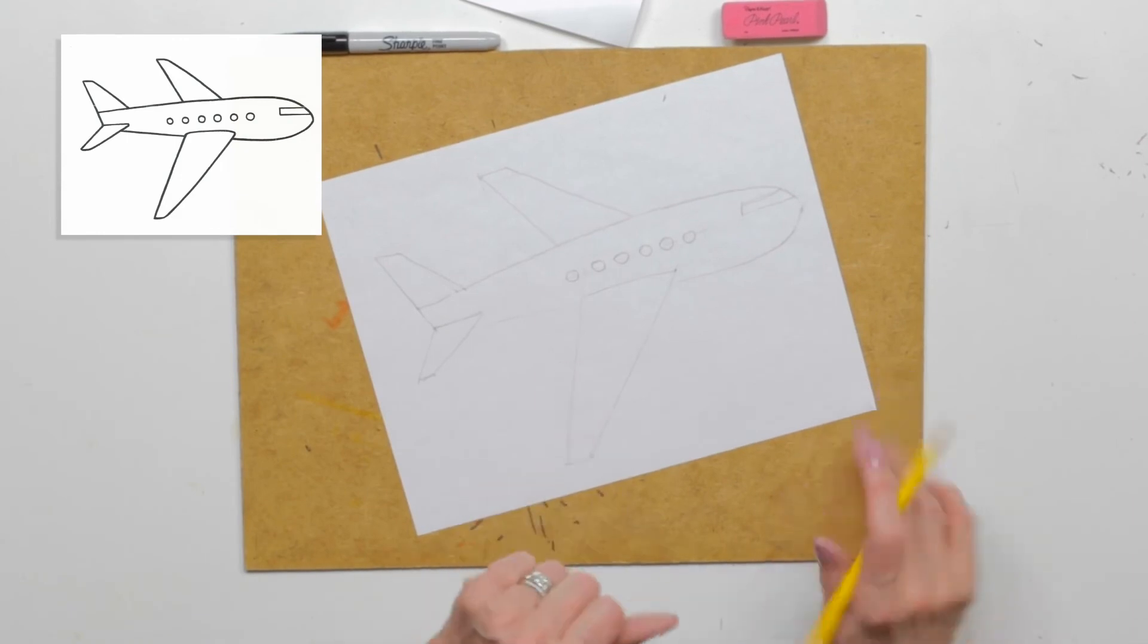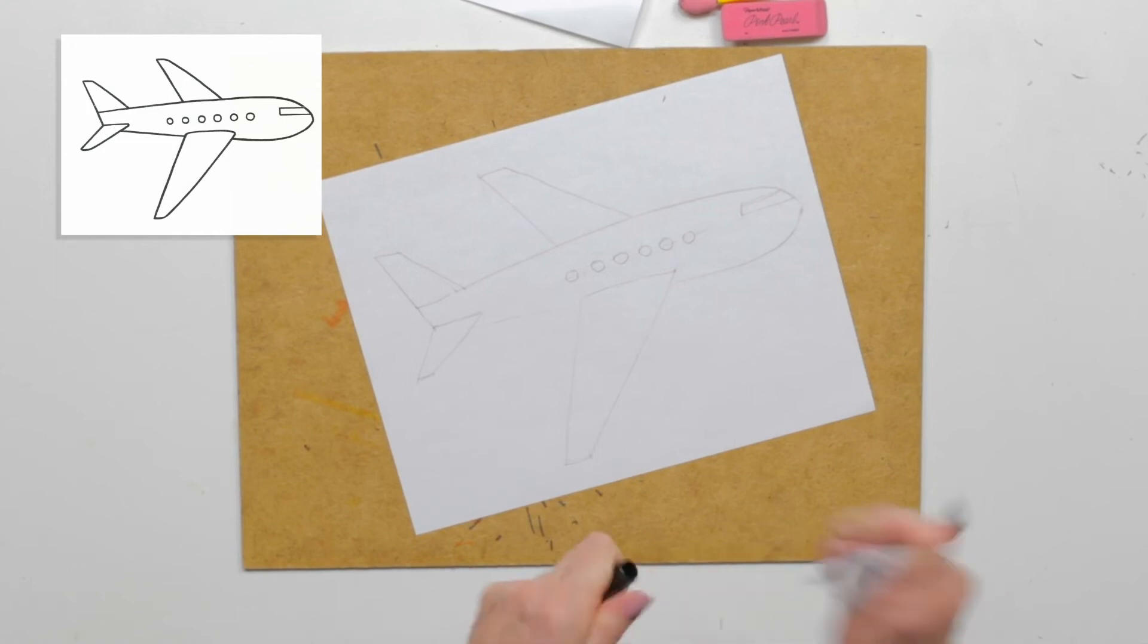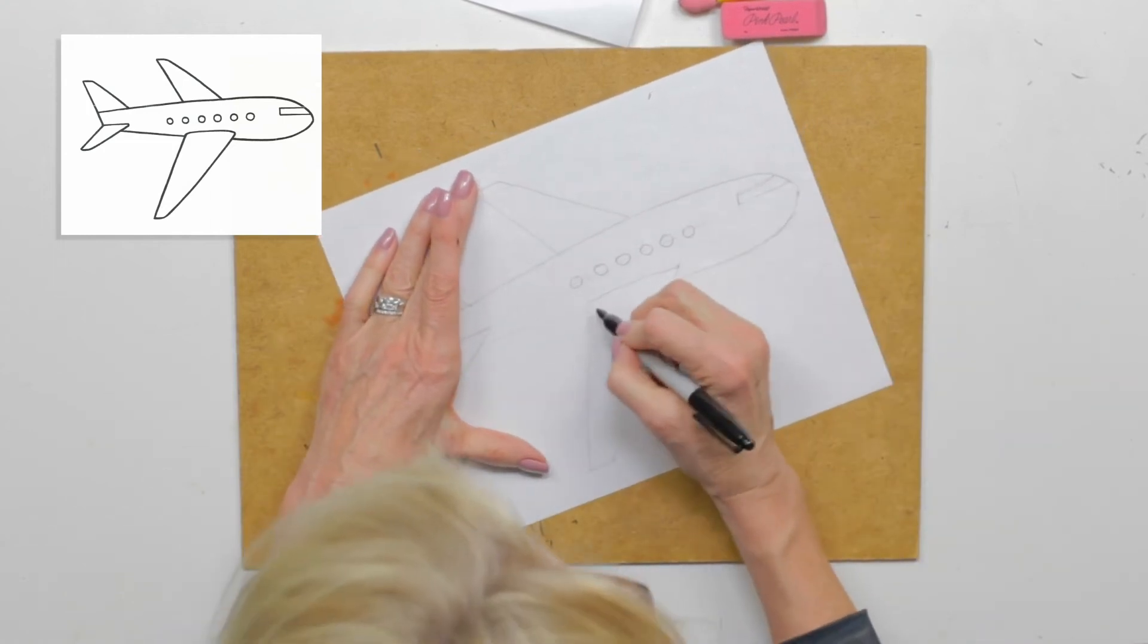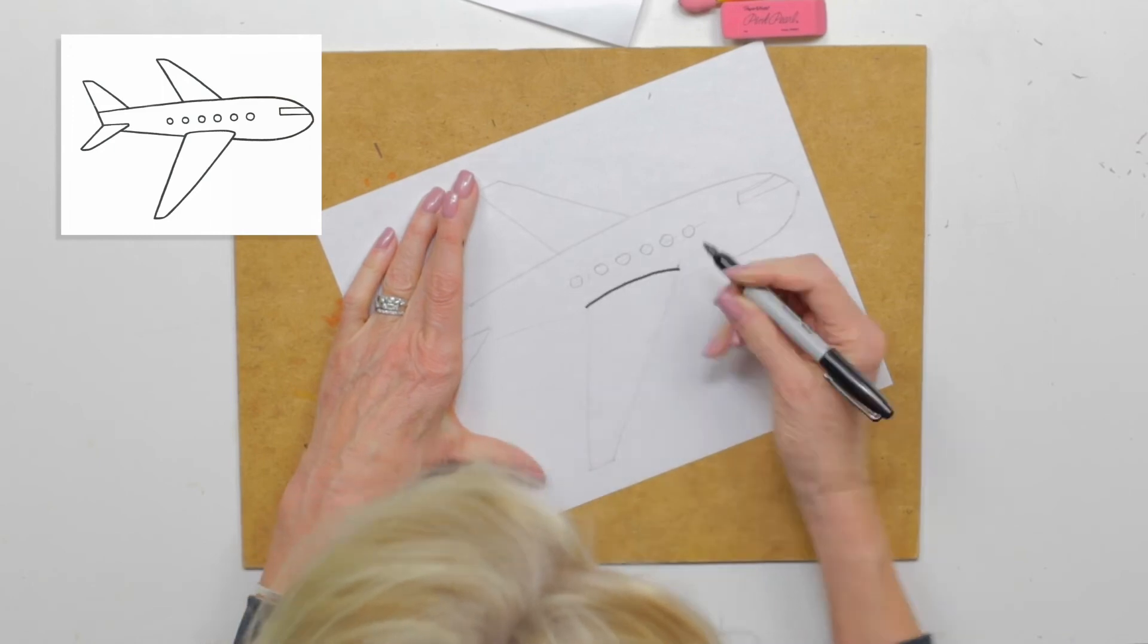We're going to start with our wing. A little bit of a curve. Let's do some erasing.